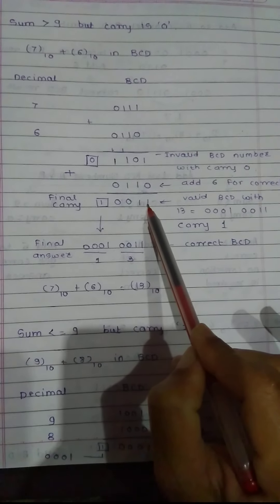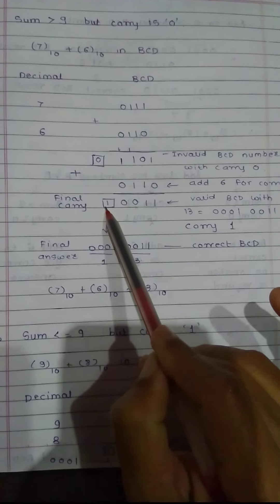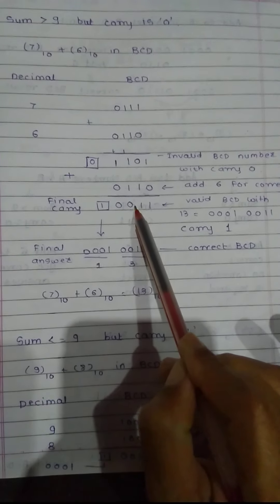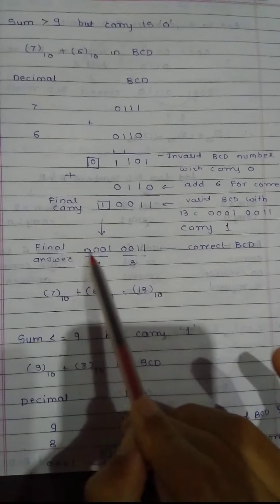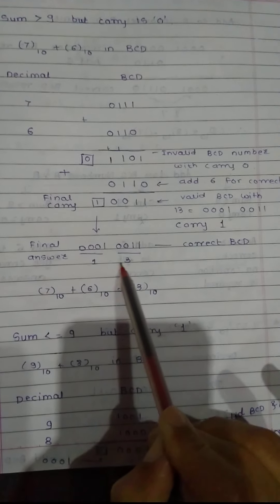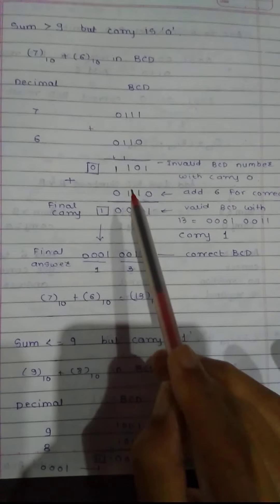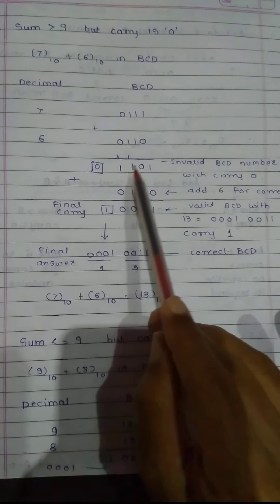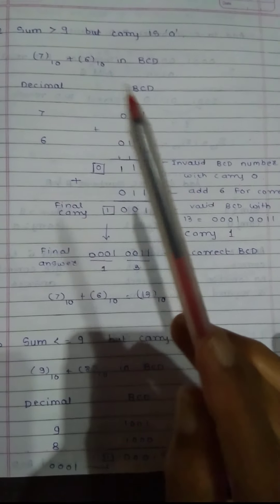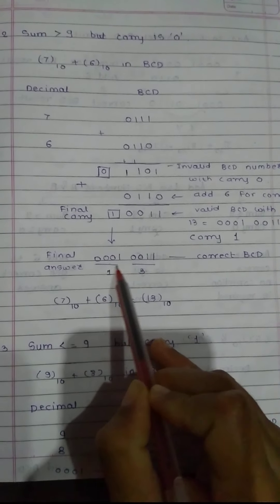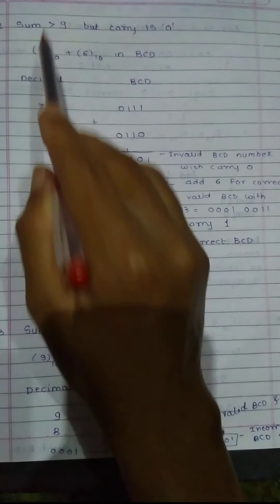Adding 0110 to 1101: 1 plus 0 is 1, 0 plus 1 is 1, 1 plus 1 is 0 carry 1, 1 plus 1 plus carry is 1 carry 1. The final carry is 1, and the lower nibble result is 0011, which is 3. With the carry as 0001, the final answer is 0001 0011, representing 13 in valid BCD — 1 and 3 separately.